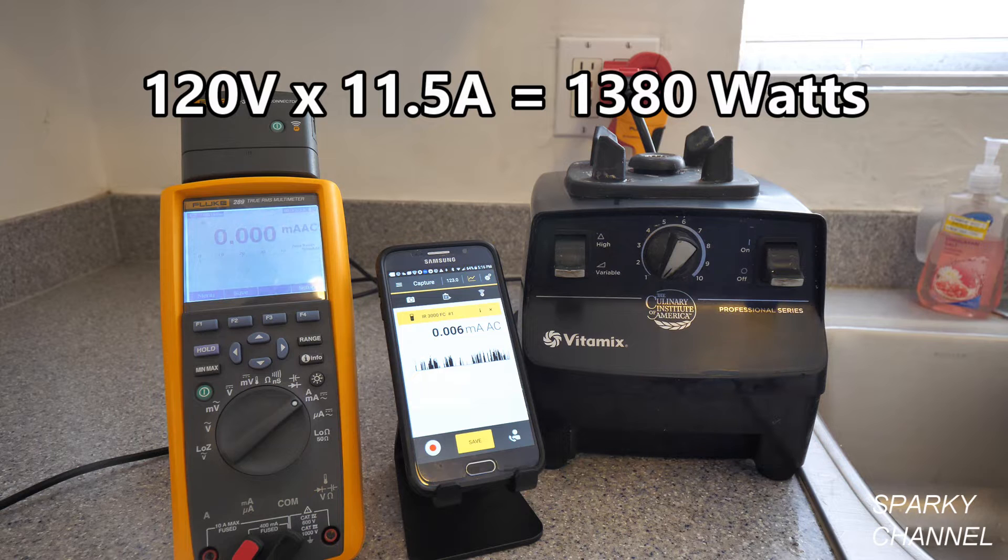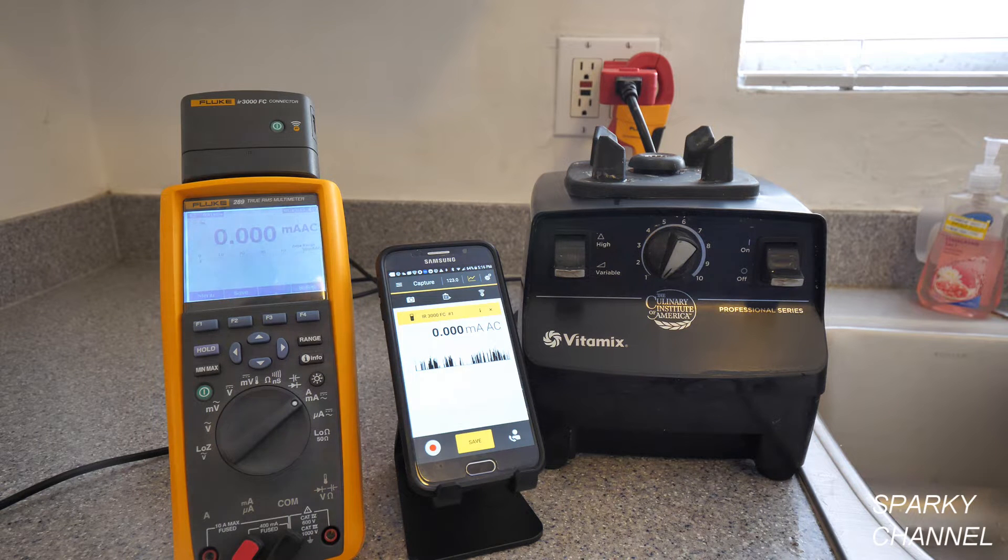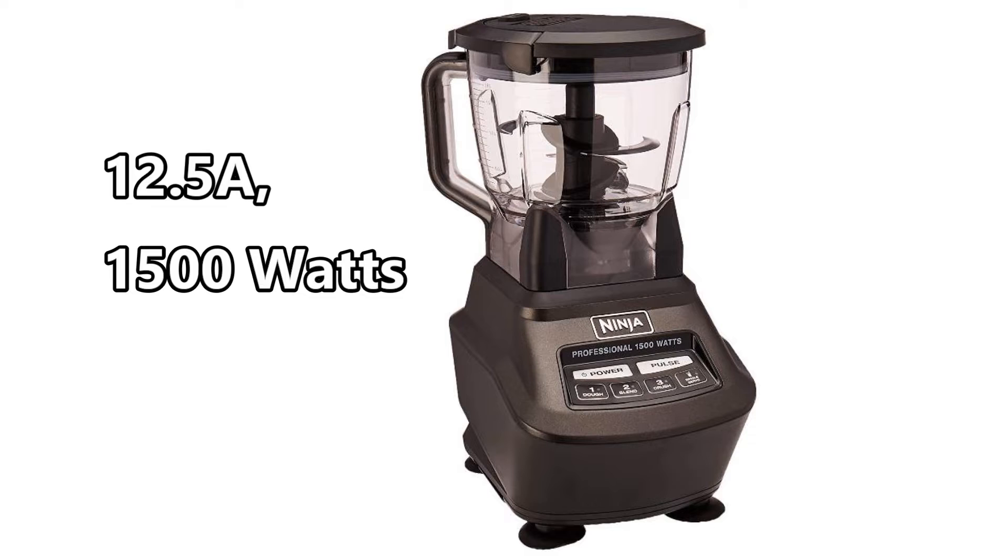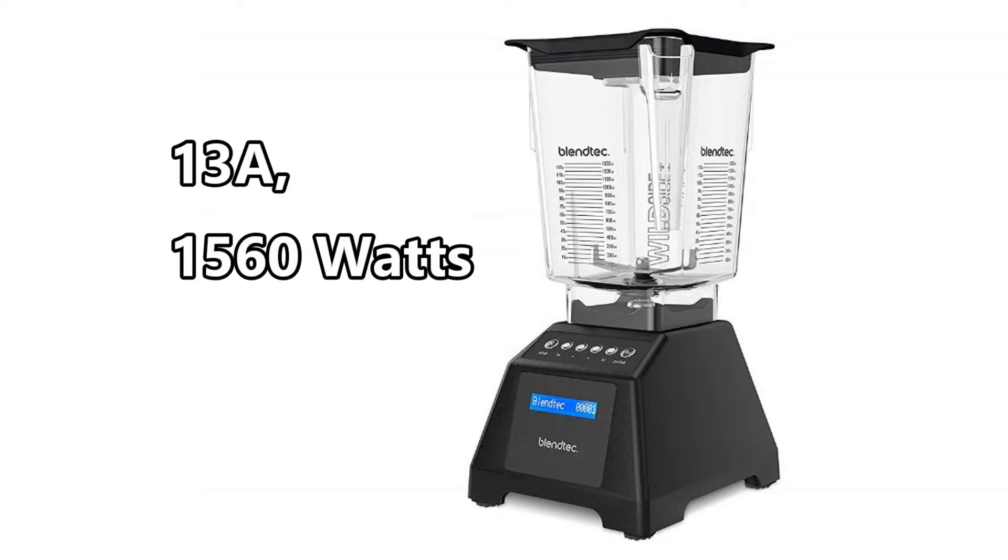So that's a lot of wattage, but the newer ones are even more. For instance, the Vitamix 7500 is 12 amps and 1440 watts. The Ninja Mega Kitchen is 12 and a half amps and 1500 watts. And the Blendtec 560 is 13 amps and 1560 watts.